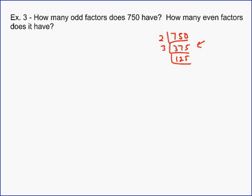Now, 3 doesn't go into 125, because 1 plus 2 plus 5 is 8, which is not a multiple of 3. But I know 5 goes into this. And 5 is going to go into 125 25 times. And then 5 obviously goes into 25 five times. So your prime factorization of 750 is 2 times 3 times 5 to the third.